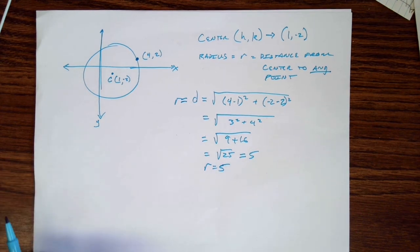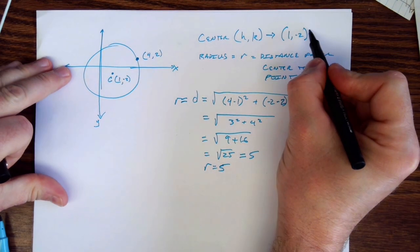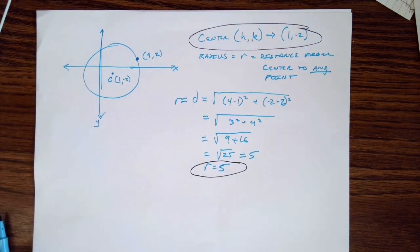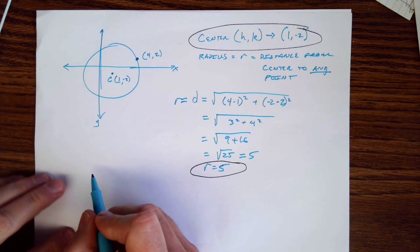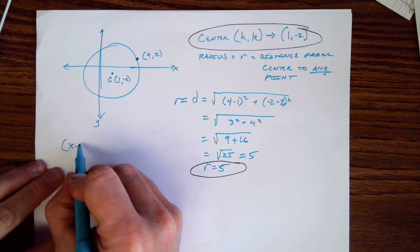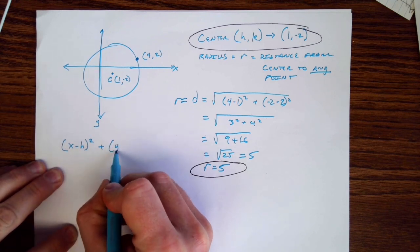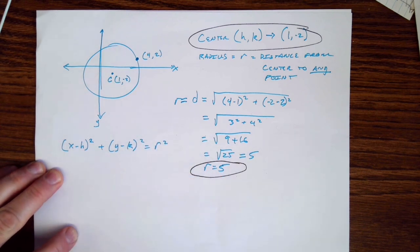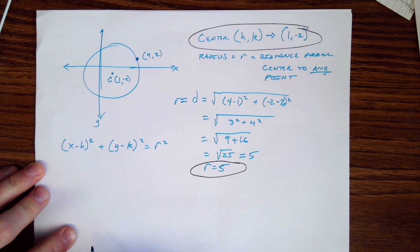Now I have everything I need. I have my center and my radius. So now you just got to remember that the equation for a circle is x minus h squared plus y minus k squared equals r squared.